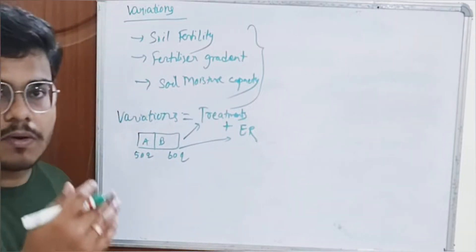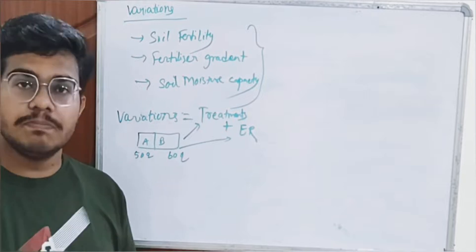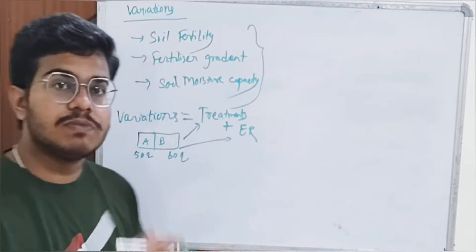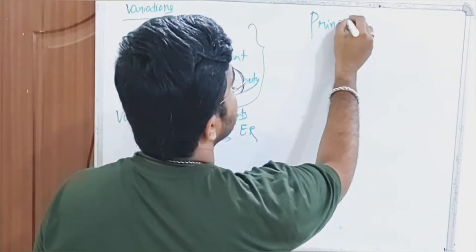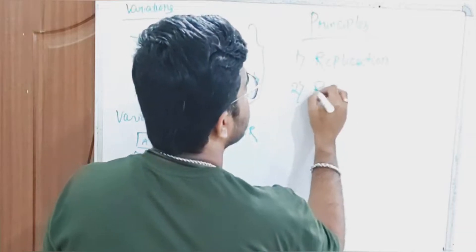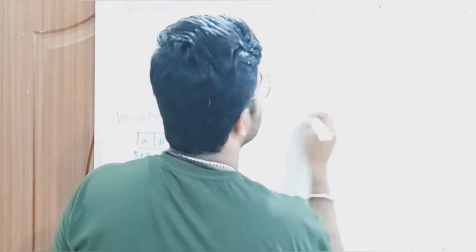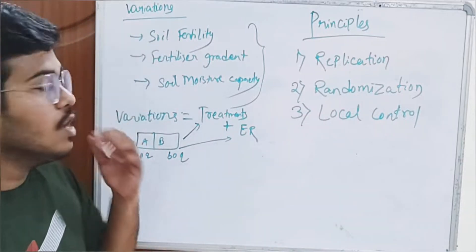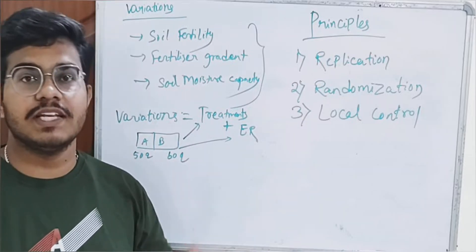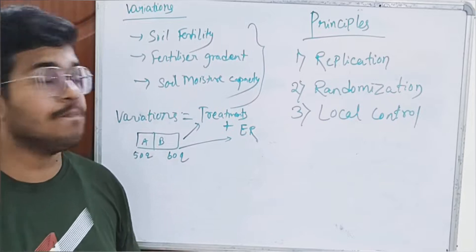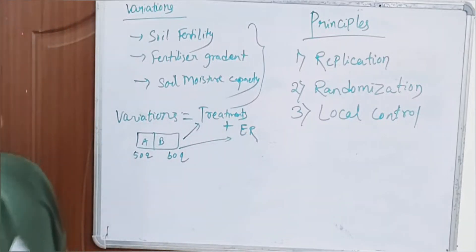To find and address experimental error, there are certain principles. The objectives — to estimate, to validly estimate, and to reduce the experimental error — can be fulfilled by following three principles. These three principles are: Replication, Randomization, and Local Control. We will discuss each principle and how it helps fulfill these objectives.